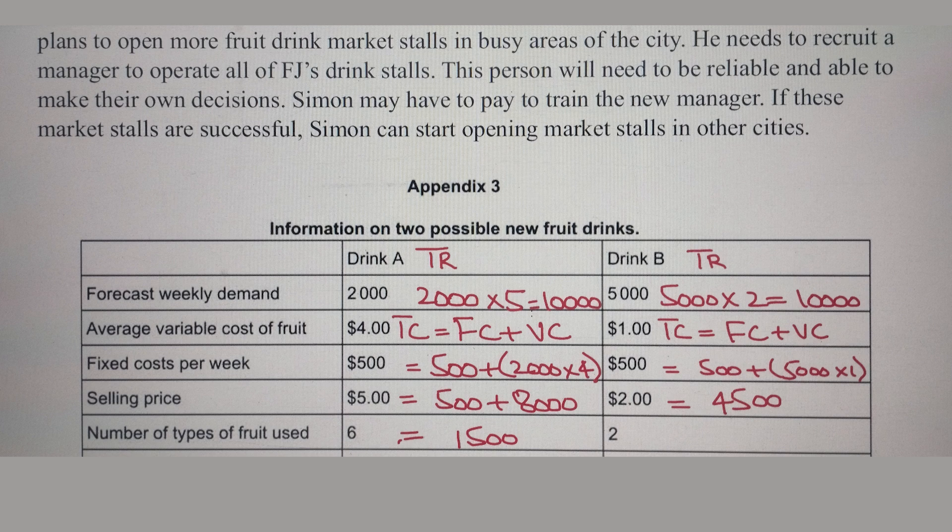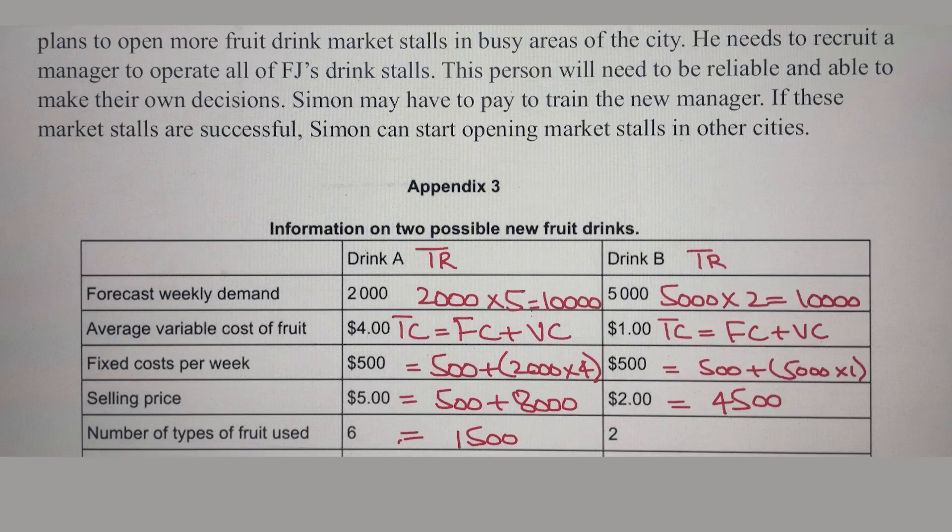Now let's look at Appendix 3 — information on two possible new fruit drinks. Forecast weekly demand: for Drink A it is 2,000; for Drink B it is 5,000. Drink B is able to sell more drinks, so maybe fewer risks are involved because there are plenty of drinks being sold. Even if sales fall a little, it won't have much effect on profits. For Drink A, if sales go down by 1,000 units, half the sales would be lost.